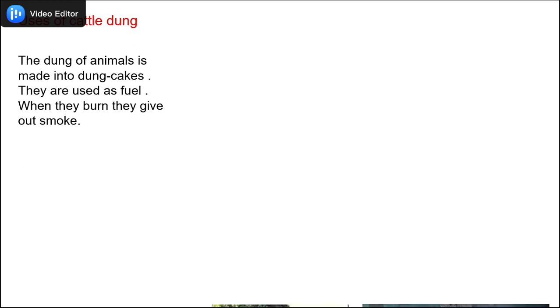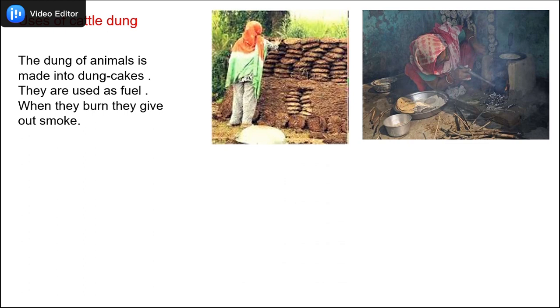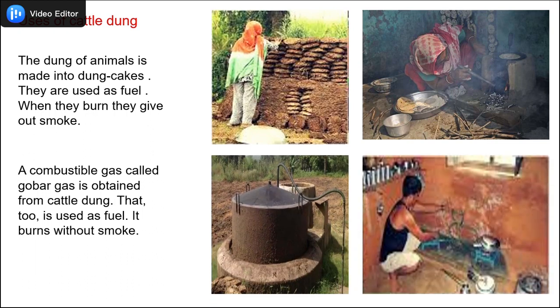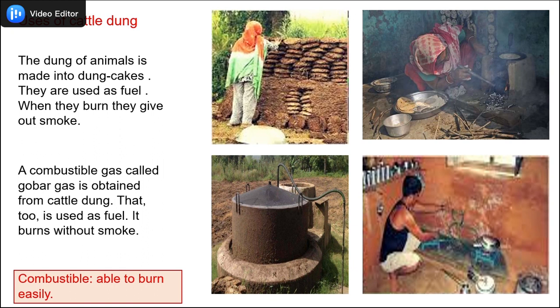Uses of cattle dung: the dung of cattle is made into dung cakes and they are used as fuel. When they burn, they give out smoke. You can see the lady making dung cakes, which is used for cooking and generates a lot of smoke. A combustible gas called gobar gas is obtained from cattle dung — that too is used as fuel and it burns without smoke. You have the biogas generator plant on your screen. We learn a new term: combustible means able to burn easily.